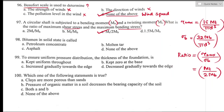Question number ninety-eight: bitumen in solid state is called — bitumen is a black, dark-colored viscous or solid cementitious substance consisting mainly of high molecular weight hydrocarbons derived from distillation of petroleum or natural asphalt. In solid state, bitumen is called asphalt. Option C is the right answer.